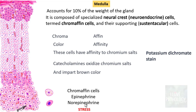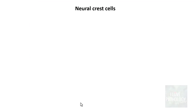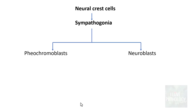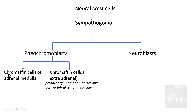Epinephrine and norepinephrine are two very important hormones which respond when the body is in stress, and they are also important for regulation of blood pressure. Neural crest cells give rise to sympathogonia, which further differentiate into pheochromoblasts and neuroblasts. Pheochromoblasts further differentiate into chromaffin cells of the adrenal medulla, and also extra-adrenal chromaffin cells — located in the pre-aortic sympathetic plexuses and para-vertebral sympathetic chain.